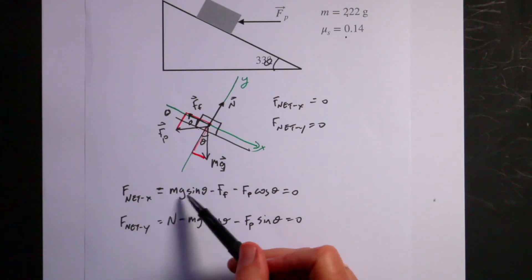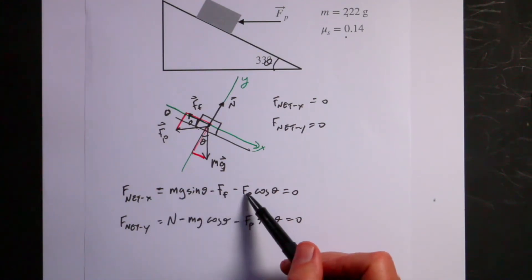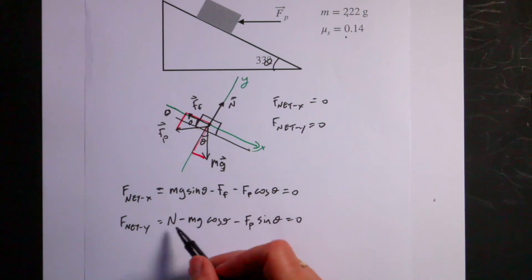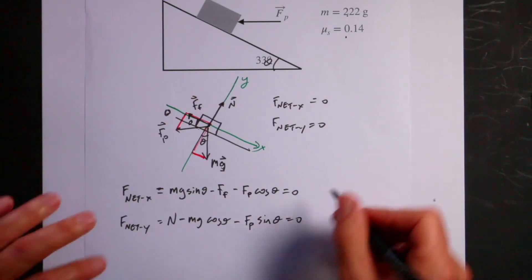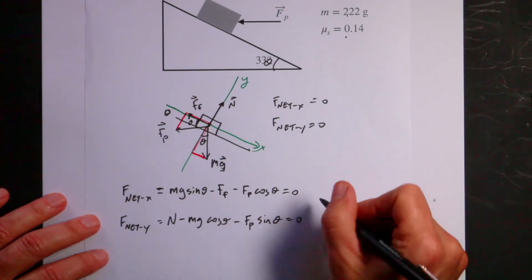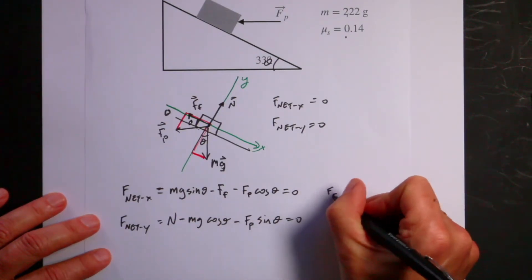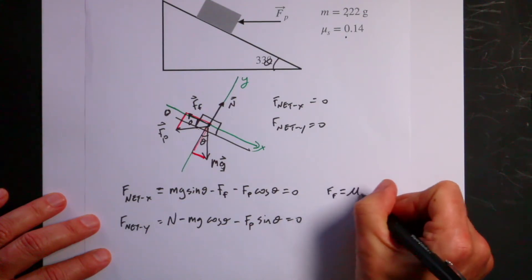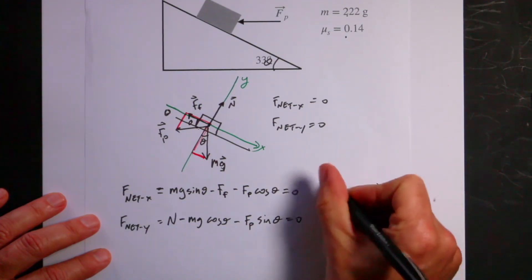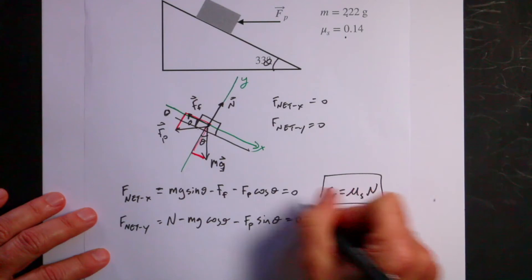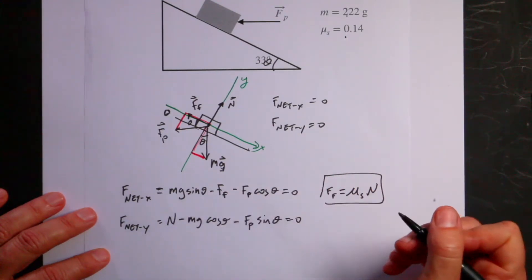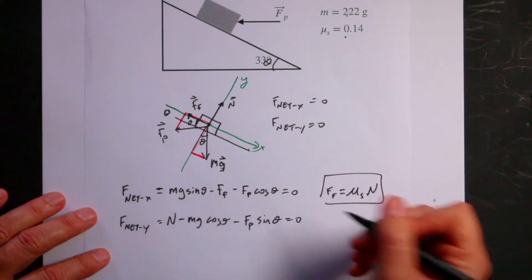I know m, I know g, I know theta. I don't know the friction force, I don't know Fp, and I don't know the normal force. So I actually have three variables and two equations. But I have another equation. If it's at the maximum friction force, I can say the friction force is equal to the coefficient of static friction times the normal force. So if I put that in here, then I can get rid of the friction force.